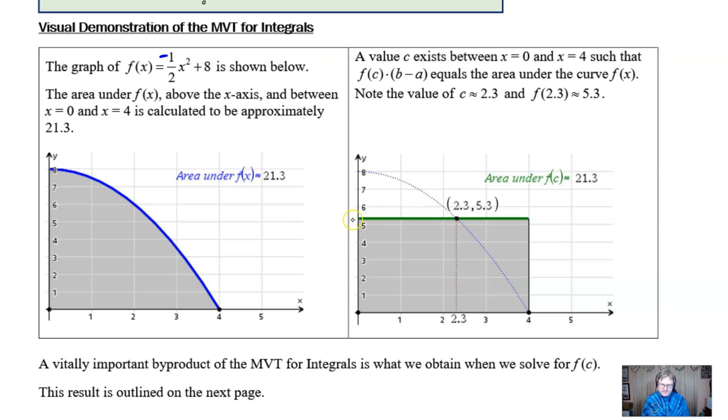If I define f(c) to be this height here, which is somewhere between 5 and 6, 5.3 specifically, and if I multiply that 5.3 times 4, lo and behold, the answer is 21.3. So in other words, the problem is just saying that there is a place where you can draw or cap out the top of a rectangle that has the same exact area as the area under the curve.